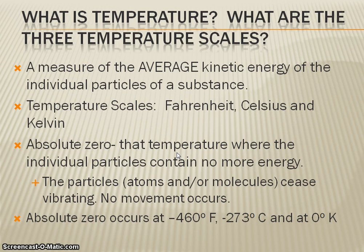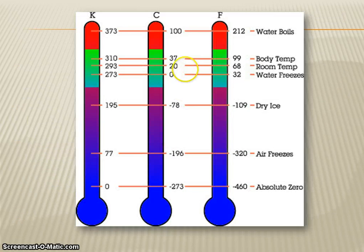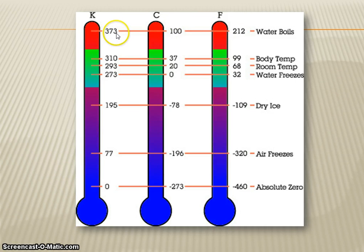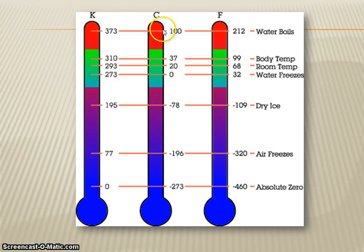The three temperature scales are Fahrenheit, Celsius, and Kelvin. On the Kelvin scale, water boils at 373, and notice that absolute zero is at zero. On the Celsius scale, water freezes at zero and boils at 100. Fahrenheit is generally used for weather and temperature in that range, with water freezing at 32.